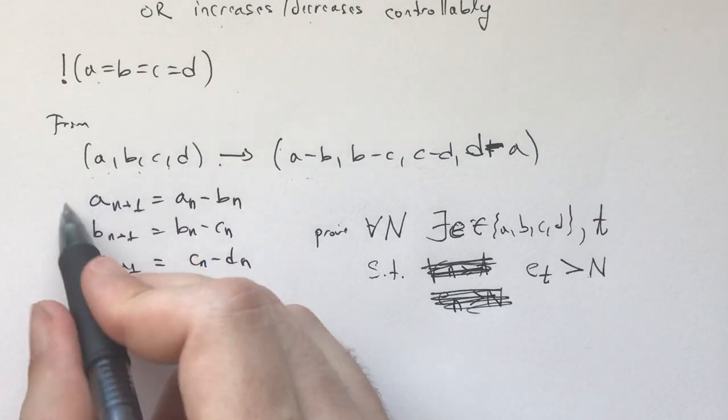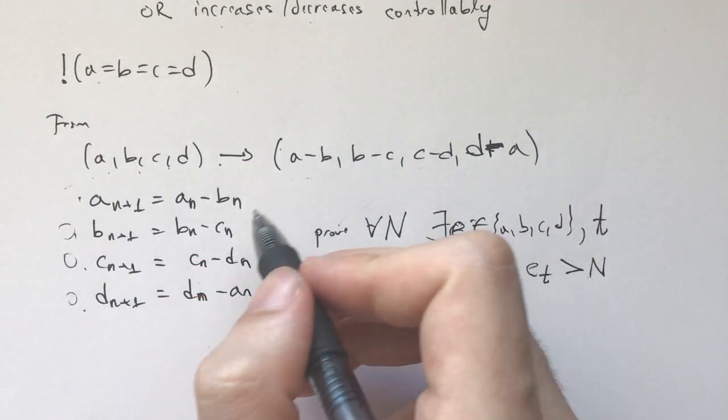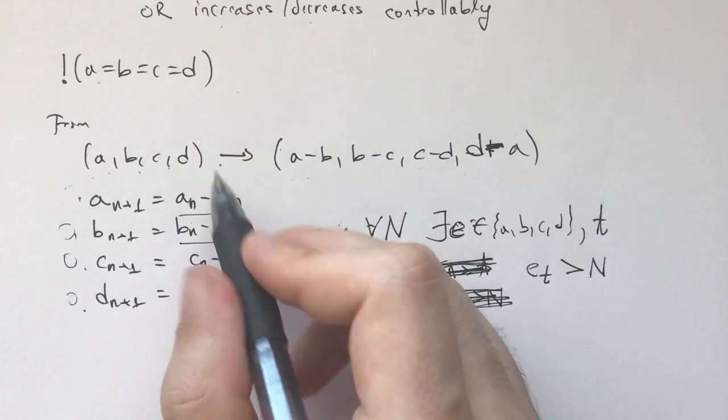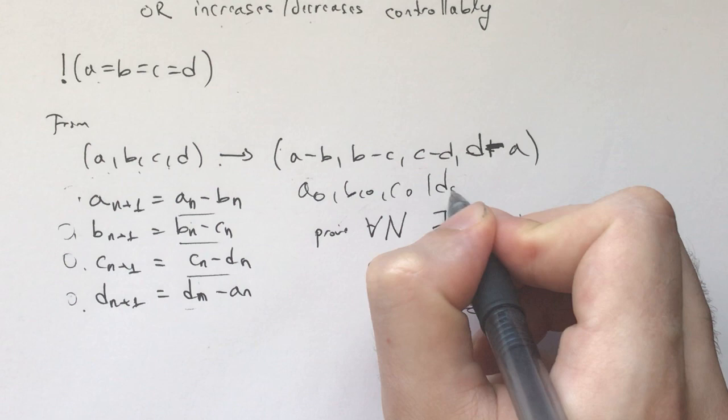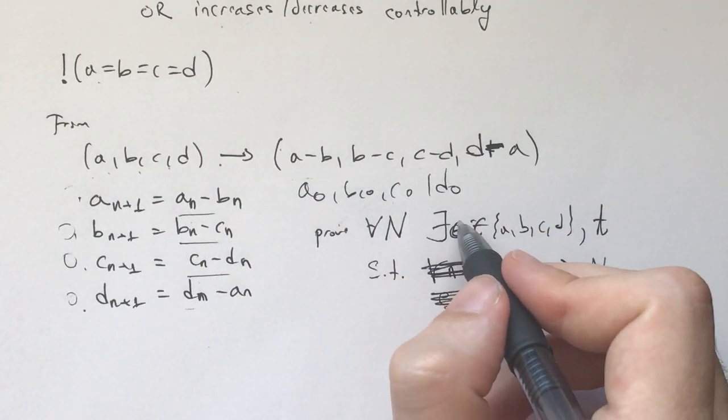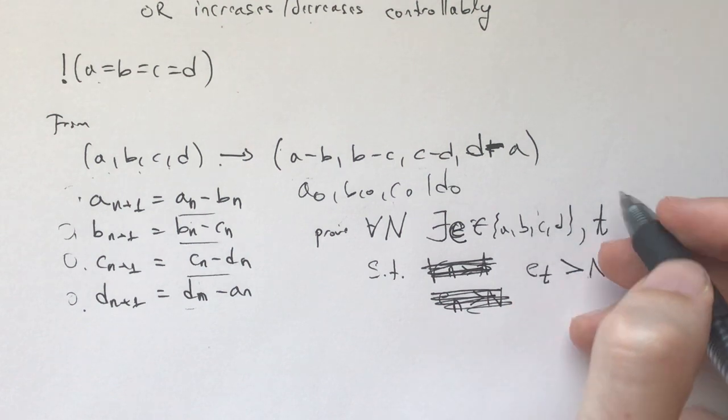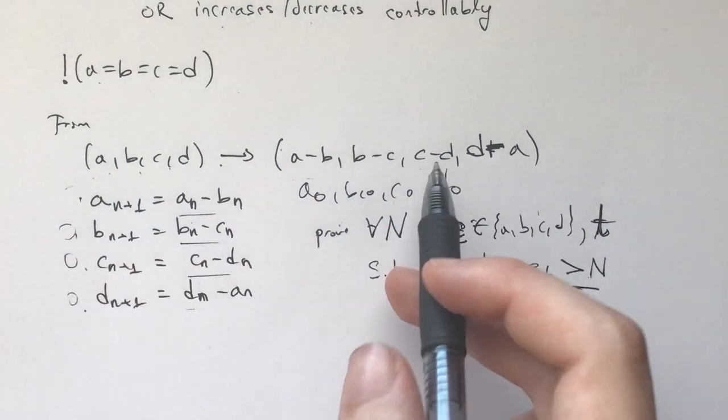If we call these sequences of a, b, c, and d that satisfy this, with an initial a0, b0, c0, and d0 not all equal, then we must prove that for every N, there exists an E, that's one of these, and a t such that Et is greater than N.